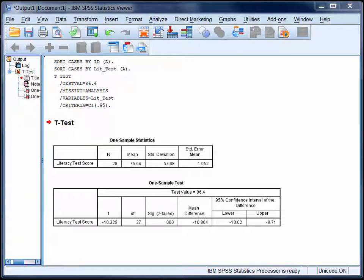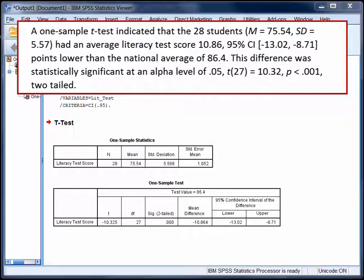To report this finding, we might say something like: a one-sample t-test indicated that the 28 students had an average literacy test score 10.86 points lower than the national average of 86.4. This difference was statistically significant at an alpha level of .05.